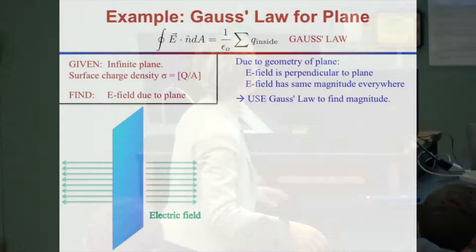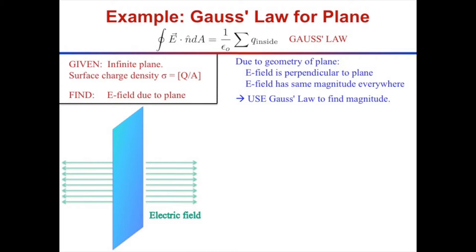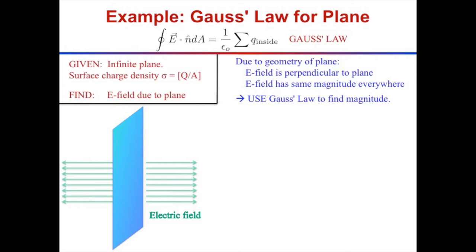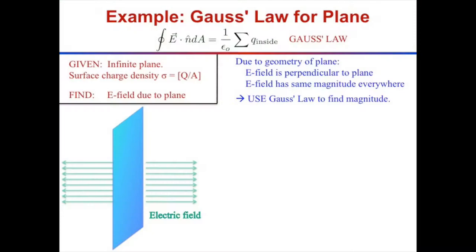Given an infinite plane with uniform surface charge density, I want to find the electric field due to the plane. We did this before using point charge contributions and integration. Now we'll do it the Gauss's Law way. Due to the geometry of the plane, the electric field simply points away from the plane - away if positively charged, toward if negatively charged. I want to use Gauss's Law to find the magnitude of the electric field.